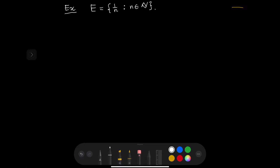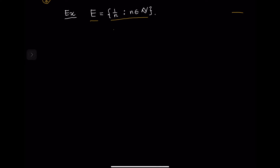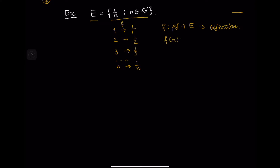Let us now consider another example of how we can count elements in a set. We have an infinite set E consisting of all fractions 1/n, where n is a natural number. We assign 1 to 1/1, 2 to 1/2, 3 to 1/3, and in general n to 1/n. The function F from the natural numbers to E, defined by F(n) = 1/n, is a bijection: it takes different natural numbers to different fractions, and for every fraction 1/n there is a natural number n with F(n) = 1/n.